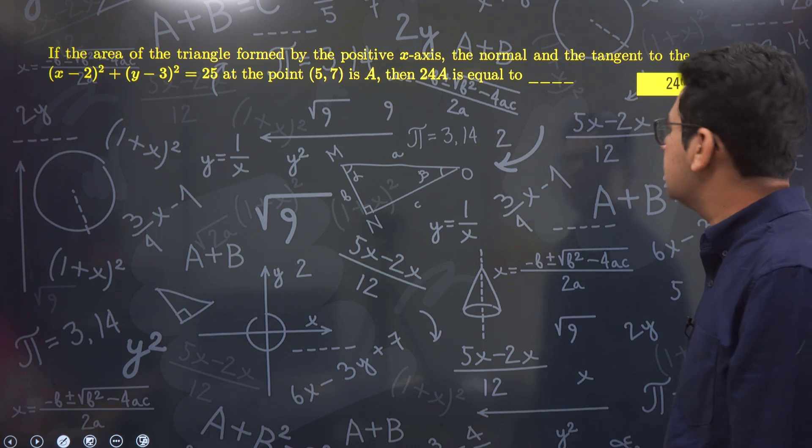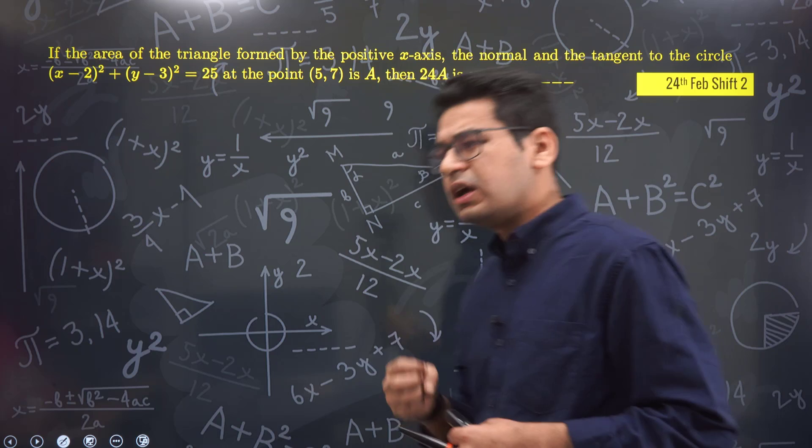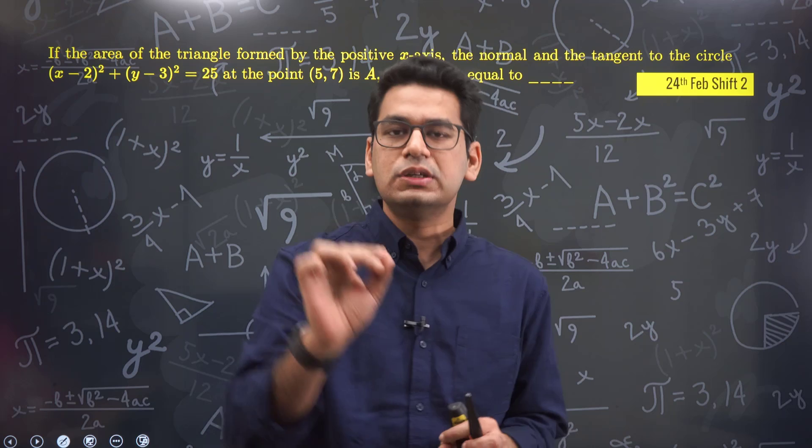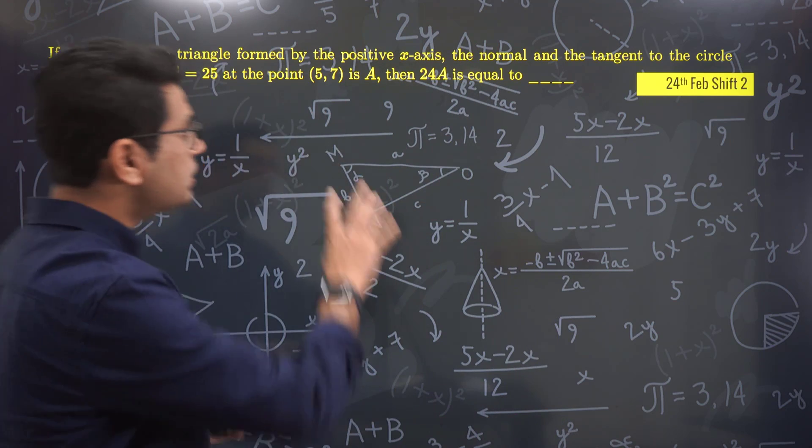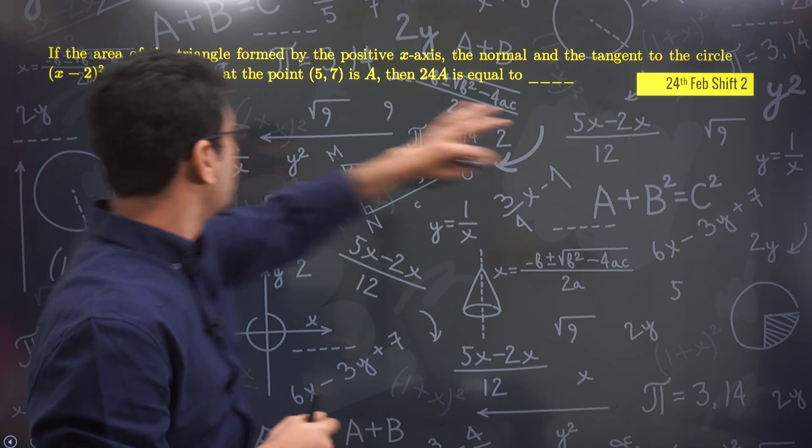The next question which we think should be given a bonus, and this is the last. All other attempts are correct. Some students asked about differentiability, some about area - all are correct. Think properly and you'll understand. This question is again an absurd question. It says 24th Feb shift 2.